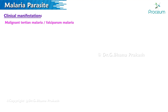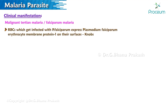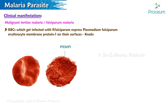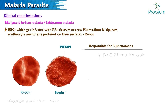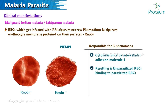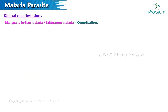Malignant tertian malaria or falciparum malaria: red blood cells infected with Plasmodium falciparum express Plasmodium falciparum erythrocyte membrane protein 1 on their surfaces, called KNOBS. This is responsible for three phenomena: cytoadherence by intercellular adhesion molecule 1; rosetting, in which unparasitized red blood cells bind to parasitized red blood cells; and agglutination, in which parasitized red blood cells bind to each other.